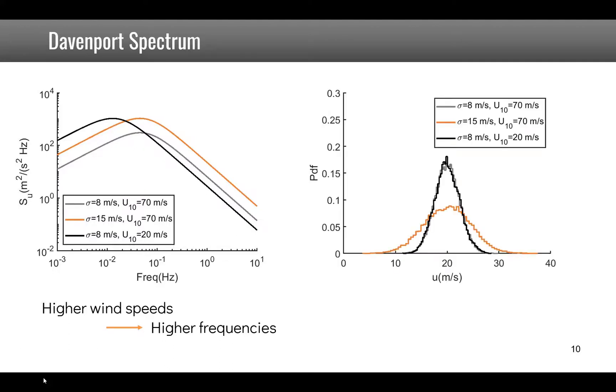If we look at the probability density function, we see clearly that if we don't change the standard deviation, we have the same density function whatever the reference U10. If we increase the standard deviation, the histogram is more spread and we have a wider probability density function. Higher standard deviation leads to wider histogram and a higher value of Su.